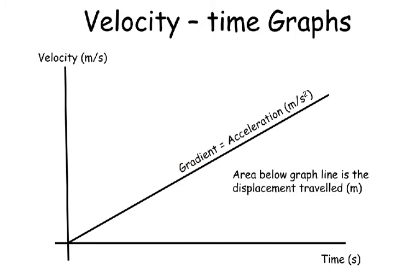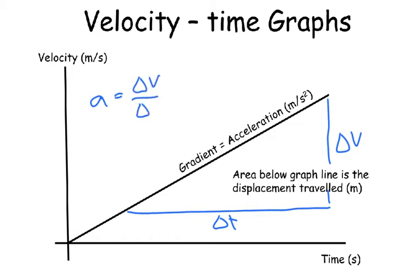Now this time we're looking at a velocity time graph. Velocity on the y-axis, time on the x-axis. You can get two lots of information with a velocity time graph. The gradient of our line here, in this case it's uniform because the gradient isn't changing, is equal to the acceleration. So if I did my change in time here and I've got my change in velocity, acceleration is equal to change in velocity over the change in time.